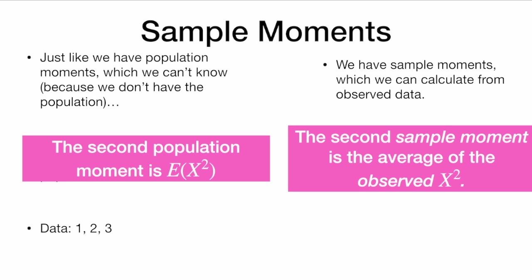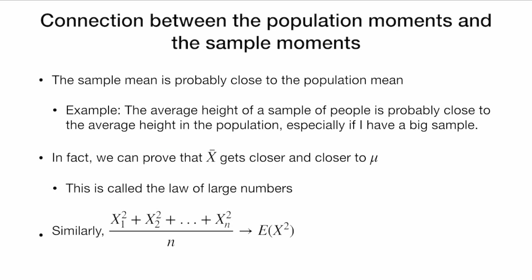Similarly, we have the second population moment, E[X²], which is unknown. But we have the second sample moment, which is the average of the observed x², and we can compute that. So with the same data set, I could compute the average value of x², which is 4.66. The sample mean is probably close to the population mean — for example, the average height of a sample is probably close to the average height in the full population, especially with a really big sample. In fact, we can prove that x-bar gets closer and closer to mu; this is called the law of large numbers. And just like x-bar gets close to mu, the other sample moments will get close to the other population moments.